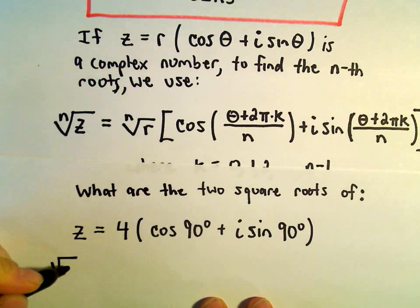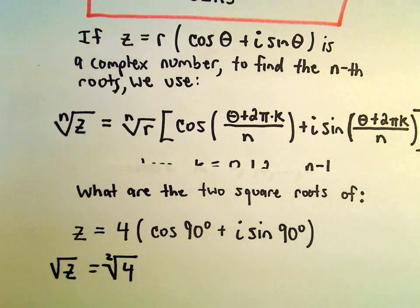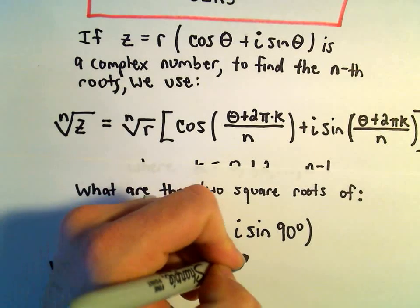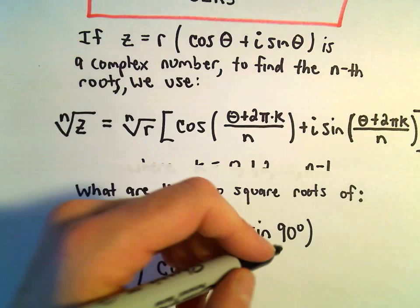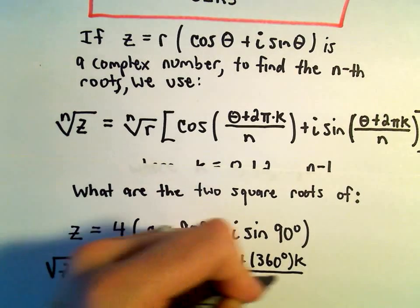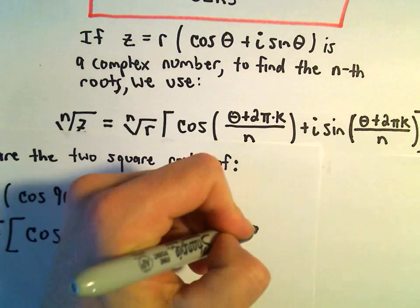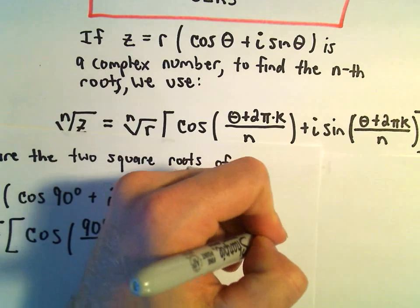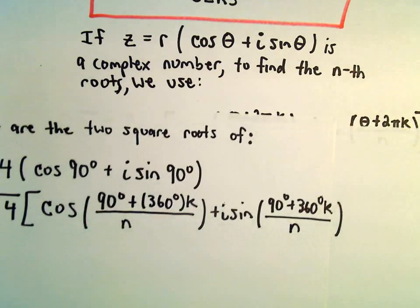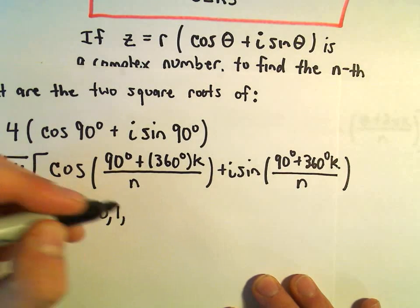We're going to take the square roots — that is, we're taking a second root here. We'll have cosine of 90 degrees plus... we use 2π in the formula, but equivalently we can use 360 degrees times k over n, plus i sine of 90 degrees plus 360 degrees times k over n. Now k can vary from 0, 1, up to n minus 1.